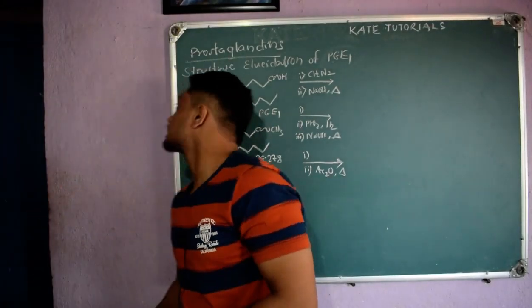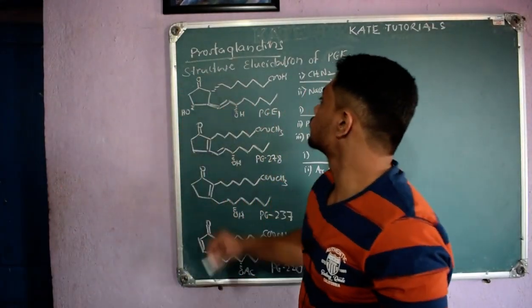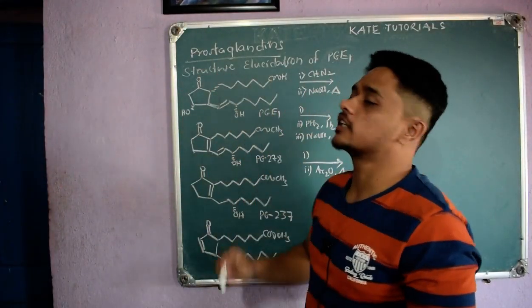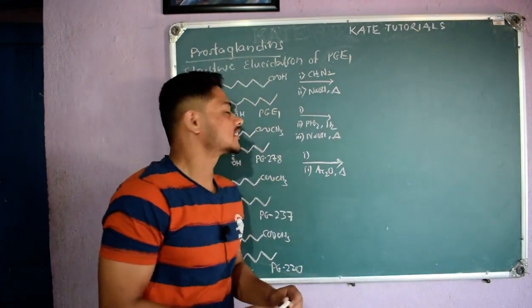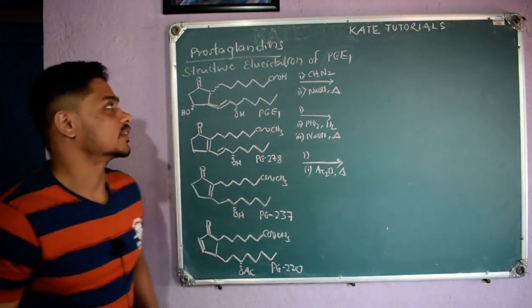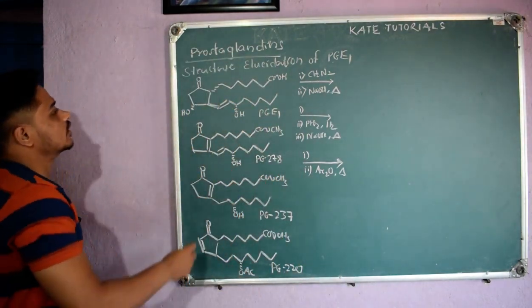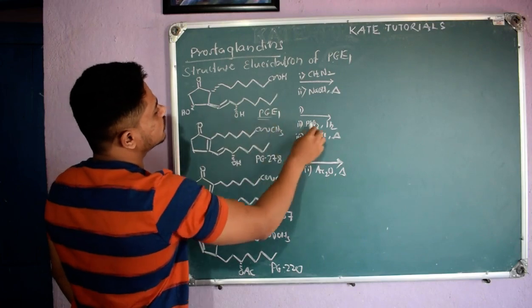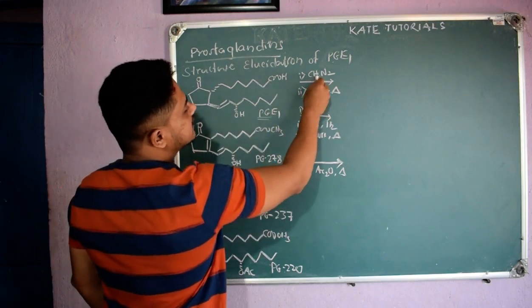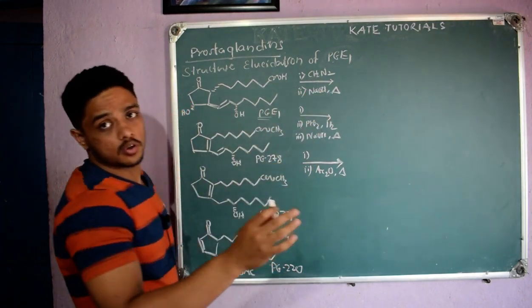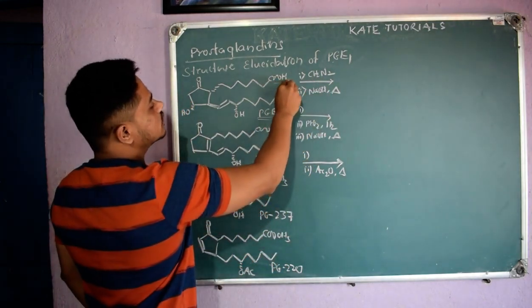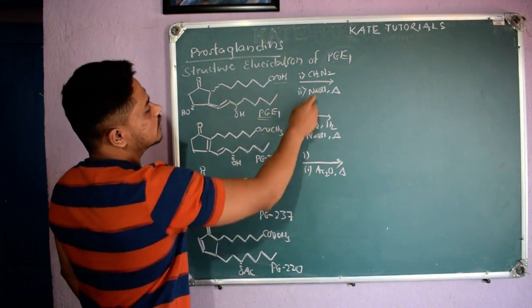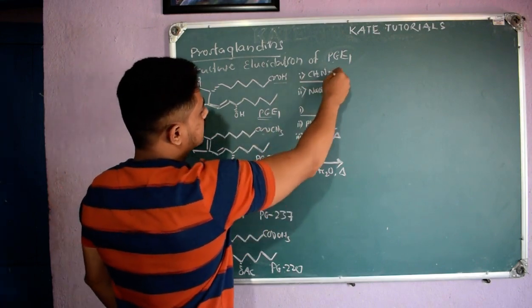Welcome friends. In the last class we were discussing the structure elucidation of PGE1. In this class let us continue with that. We took PGE1 and when we add CH₂N₂, it will convert the COOH to ester COOCH₃.